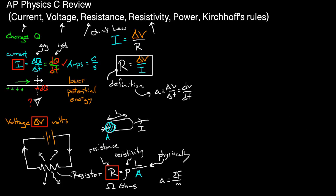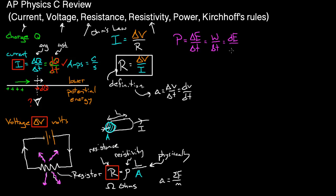Power is still defined as energy per time — how much energy something uses or transfers per second. You can think of it as work done per time, or in calculus terms, dE/dt. This has units of joules per second, or watts.